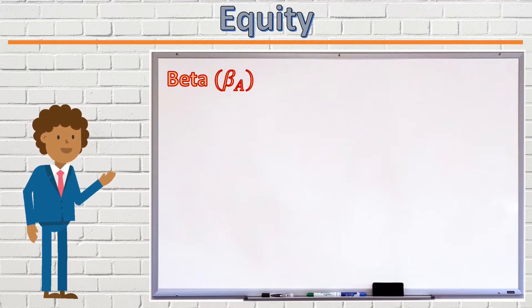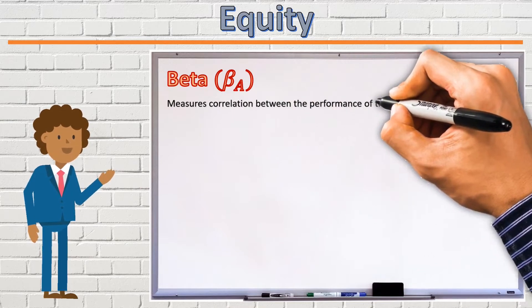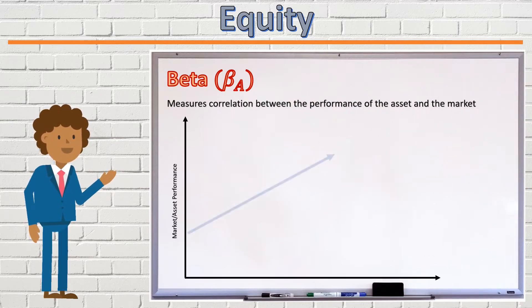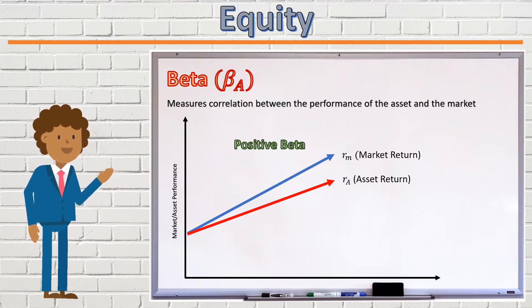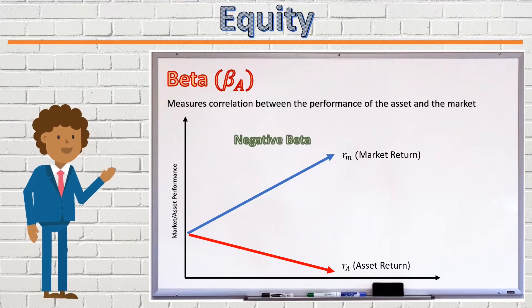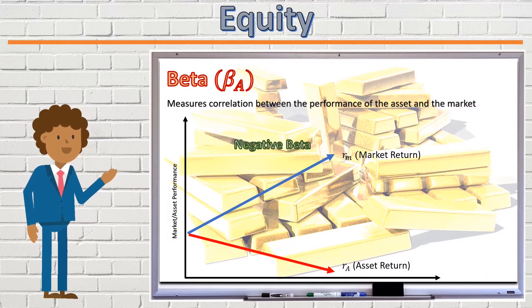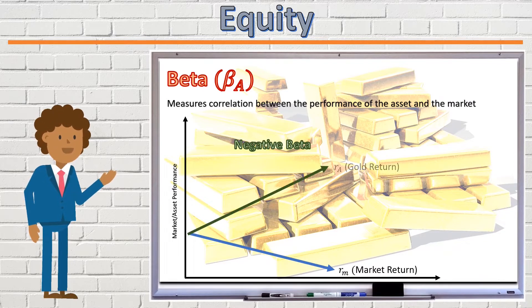Beta. The beta coefficient measures the correlation between the performance of the asset in question and the performance of the market. If the asset in question has a positive value of beta, then the asset would appreciate in value if the market appreciates in value. Assets with a negative beta move in the opposite direction to market movements. Theoretically, gold is said to have a negative beta, because in bear markets and during times of uncertainty, the value of gold increases as other assets in the market devalue.